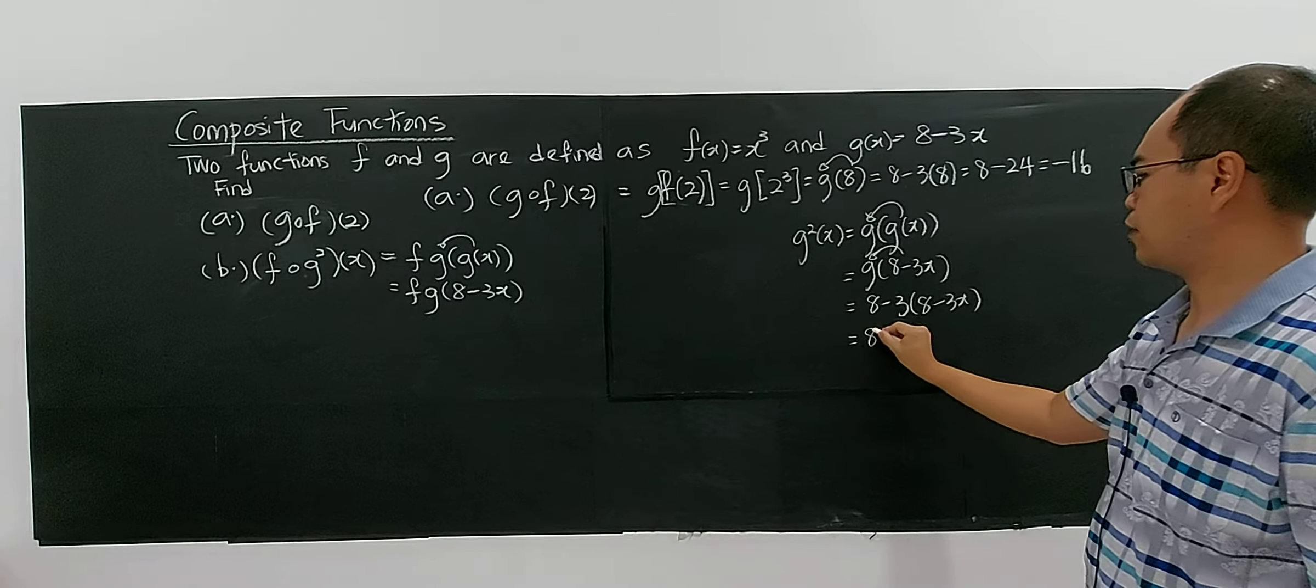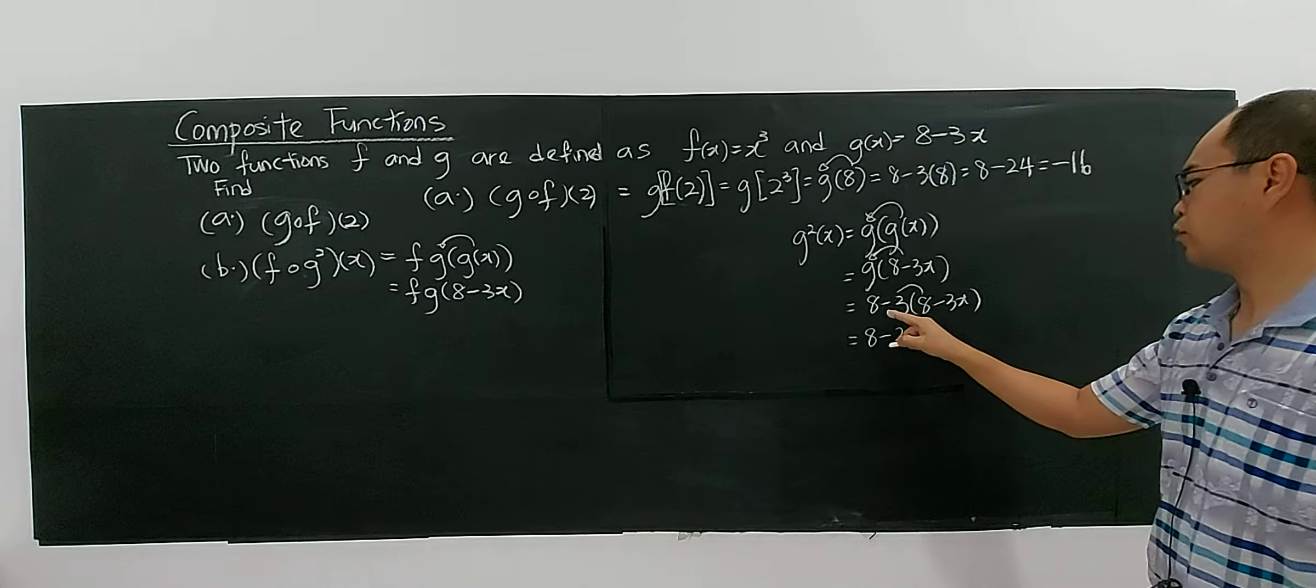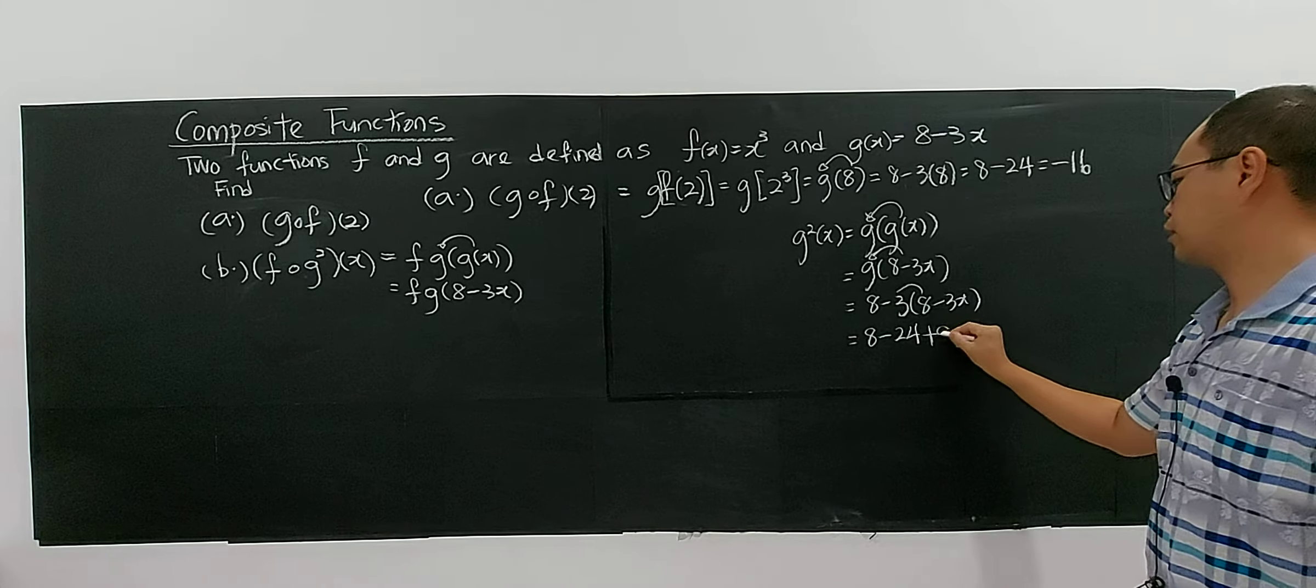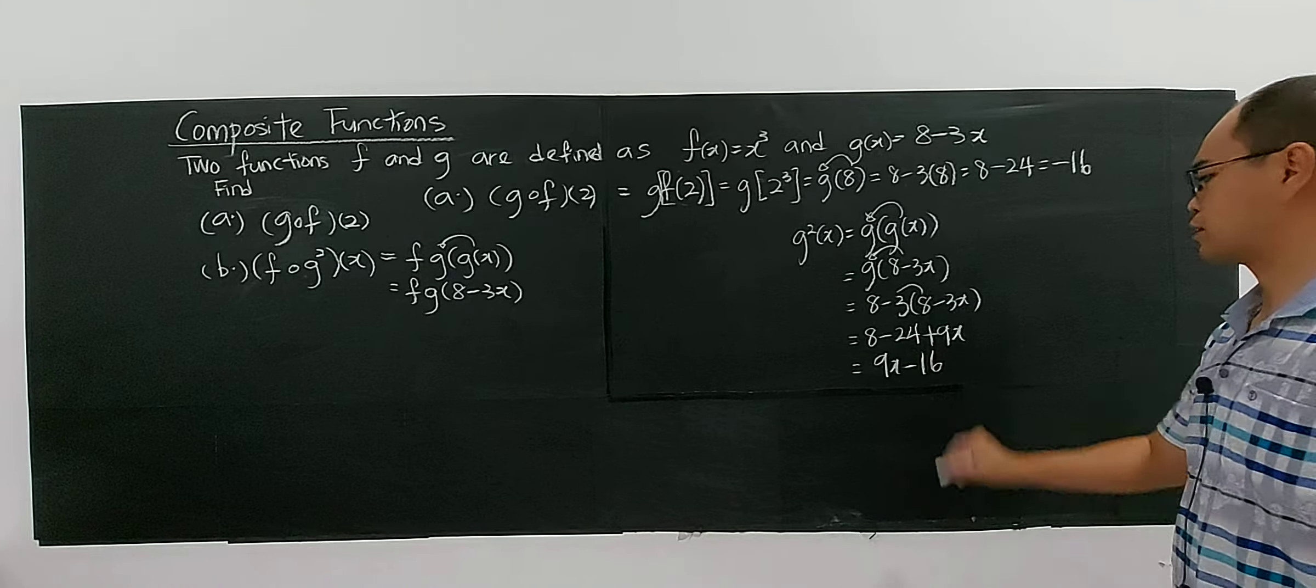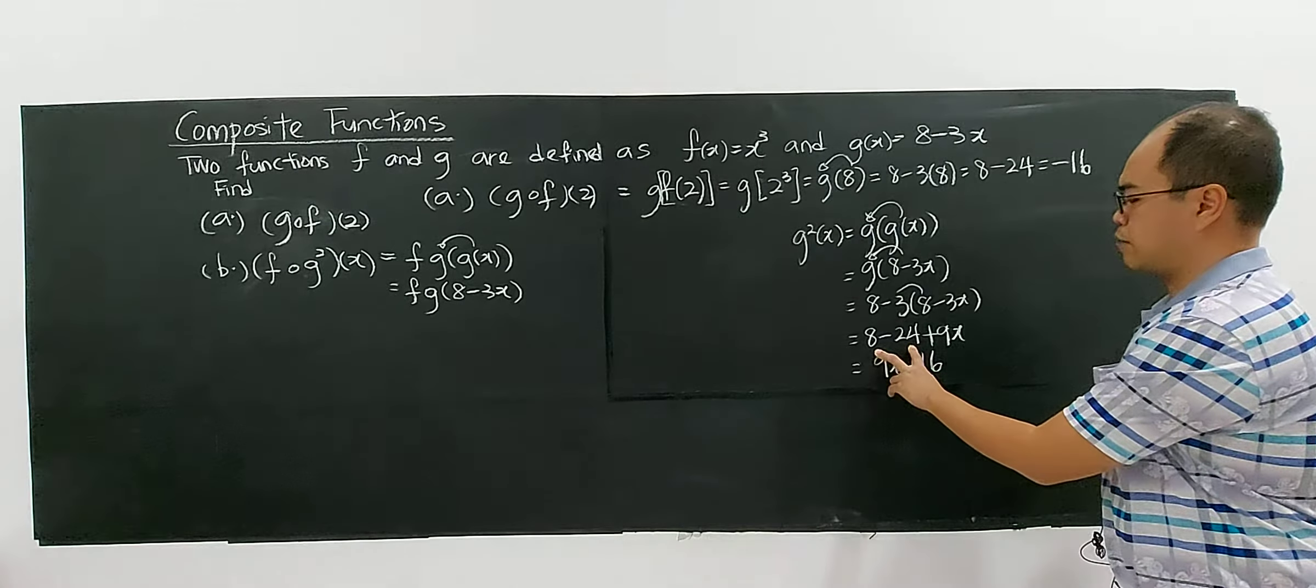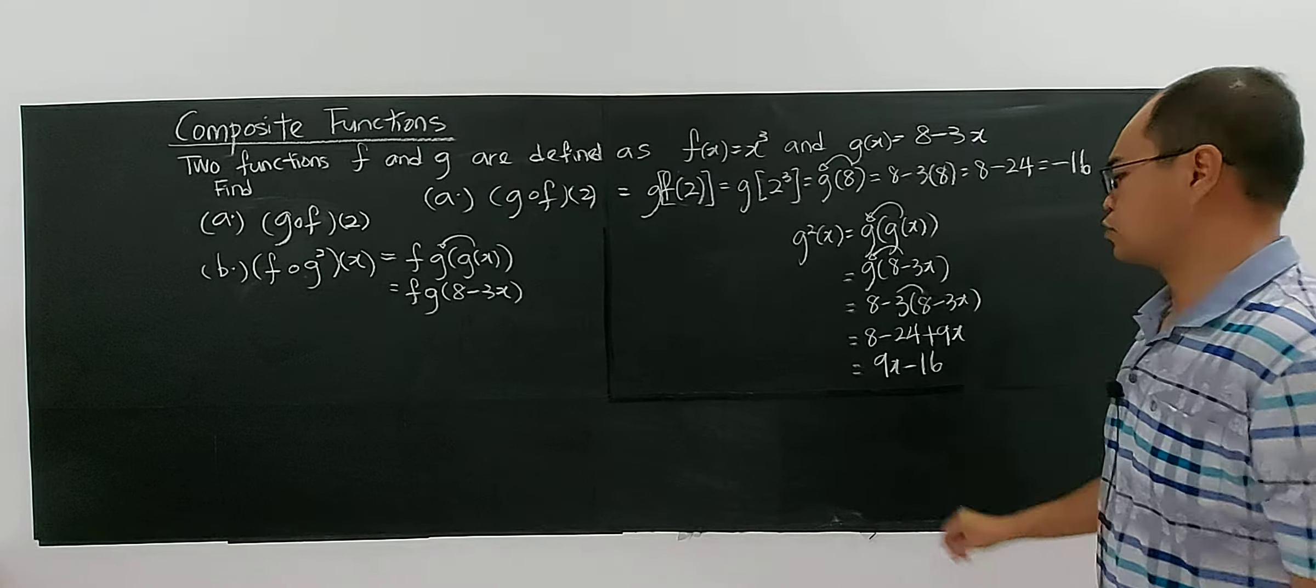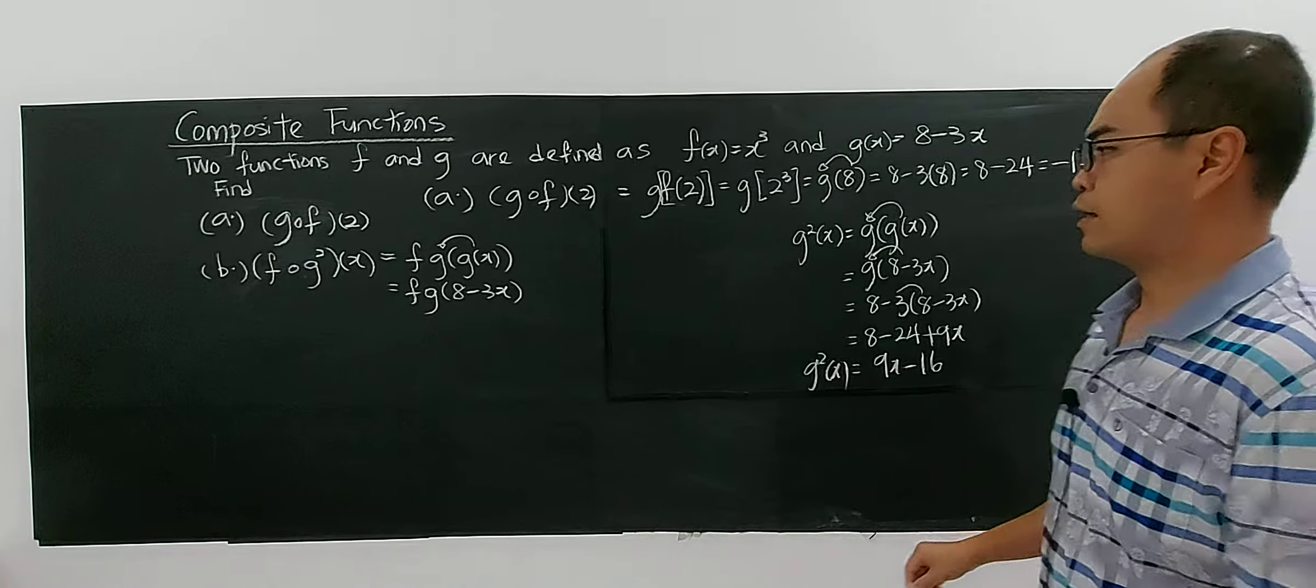So you have 8 minus 3(8 - 3x), which is 8 minus 24 plus 9x. And you have 9x minus 16. 8 minus 24 is minus 16. So this is your g²(x).